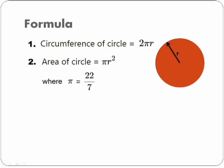Circumference means the boundary of the circle. If you want to find the length of the boundary, that is the circumference, you have to make use of the formula. This symbol is called pi. So it is 2πr, where r stands for radius, and the area of the circle is given by πr². Remember, the value of pi is 22/7.